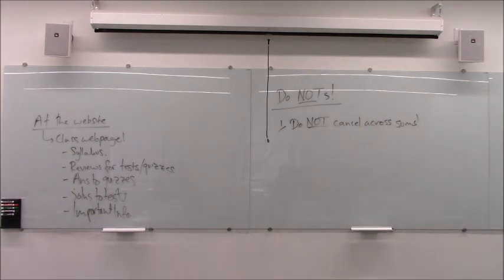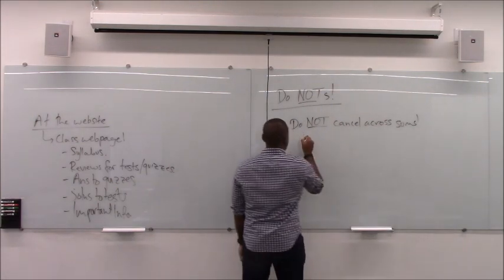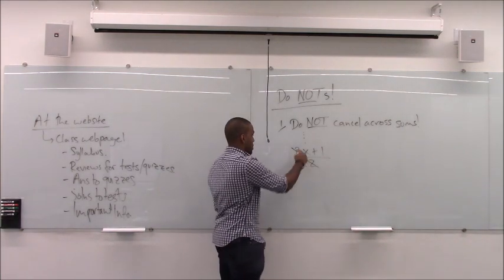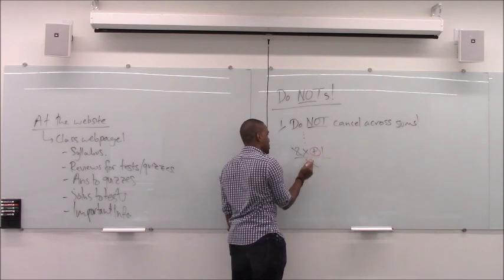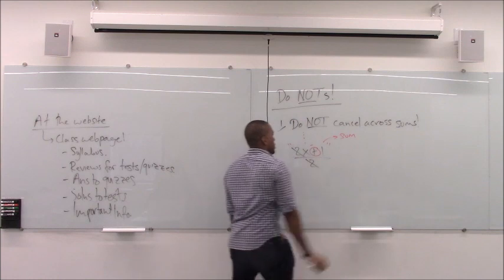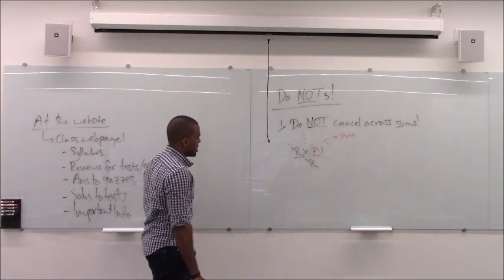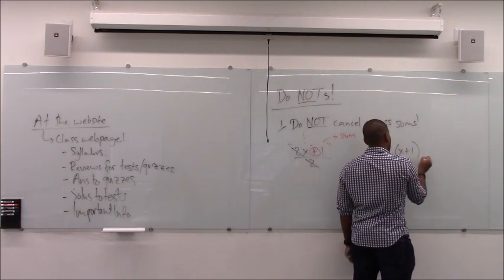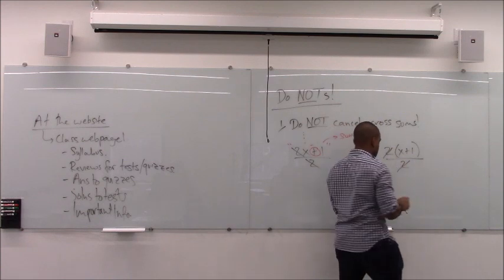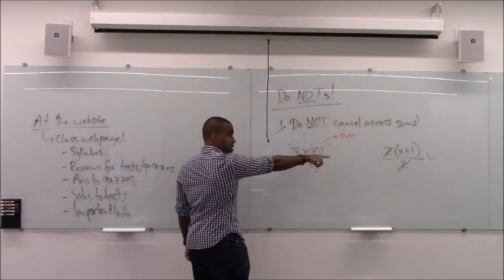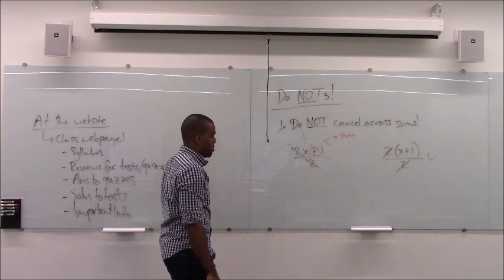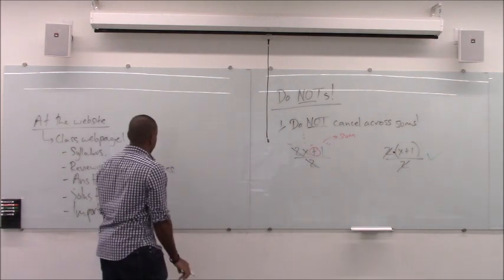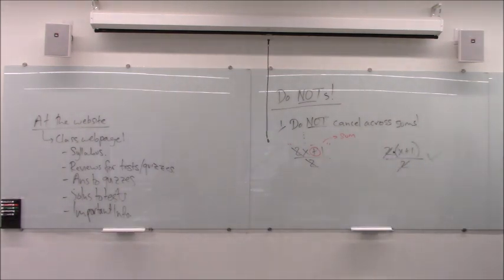The first blasphemy: do not cancel across sums. For example, if you have a fraction and you're tempted to cancel a term that's part of a sum — separated by a plus or minus sign — you cannot do that. You can only cancel across multiplication or division. If the numerator or denominator contains a sum, canceling is illegal. This is a very common mistake.